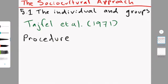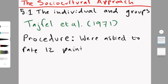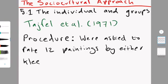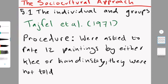The procedure sounds a bit confusing however it is actually quite simple when you fully understand it. First they asked the boys to rate 12 paintings that were by Klee or Kandinsky, who were abstract painters. On the paintings it didn't say who painted what, so the boys didn't know who painted what when they were rating them.